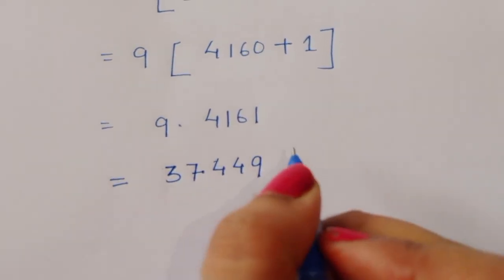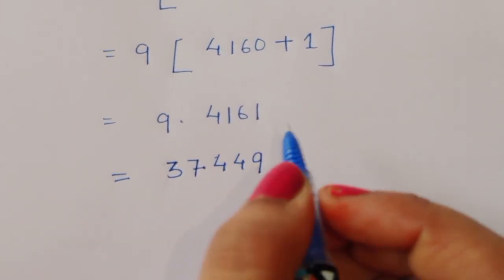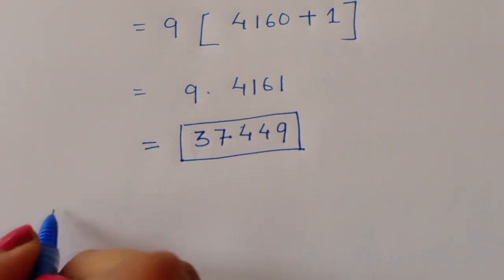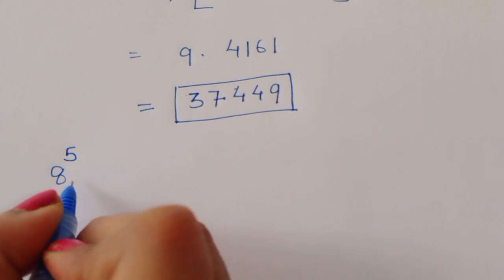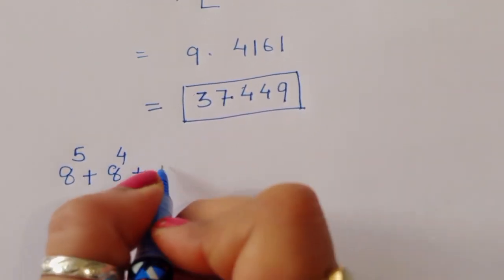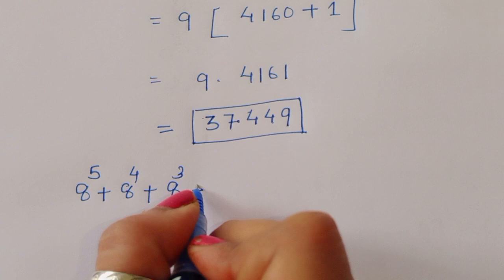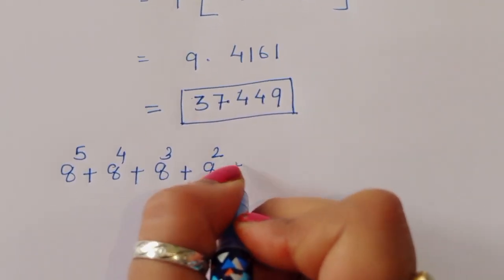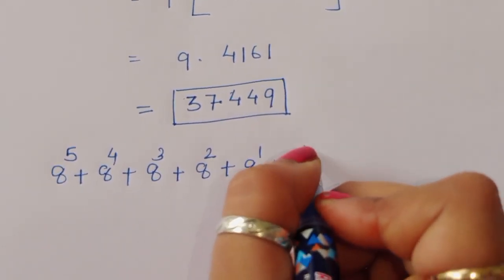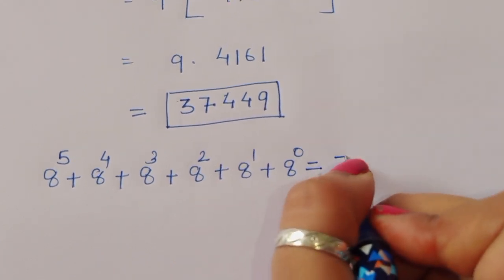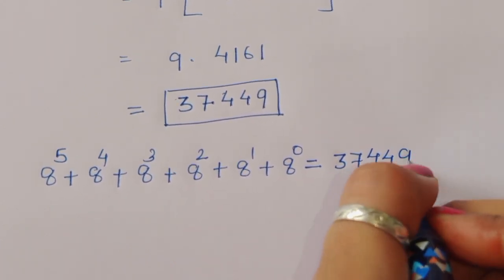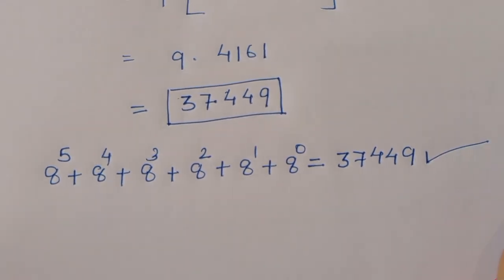Multiplying 9 times 4161 gives us 37,449. So the value of 8 power 5 plus 8 power 4 plus 8 power 3 plus 8 power 2 plus 8 power 1 plus 8 power 0 is equal to 37,449. This is the correct solution. Thank you.